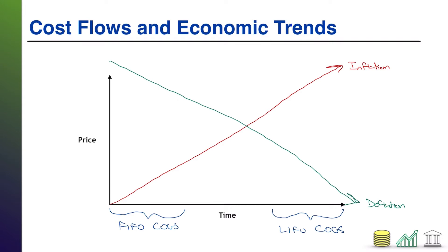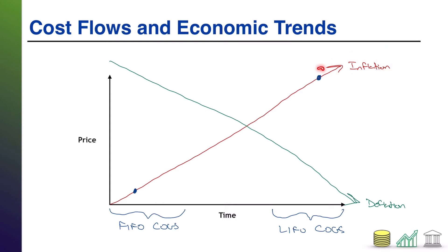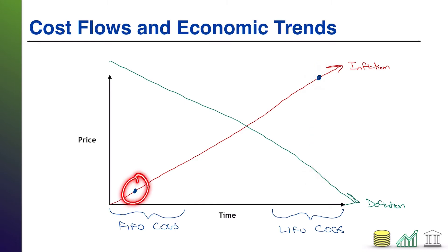Let's focus on inflation for a moment. If we're in a period of inflation, cost of goods sold under a FIFO system is way down there on the price chart, whereas cost of goods sold under a LIFO system is way up there on the price chart. That's a big gap. Since cost of goods sold is an expense on your income statement that reduces net income, in an inflationary period, net income is going to be a lot lower if you're using LIFO.